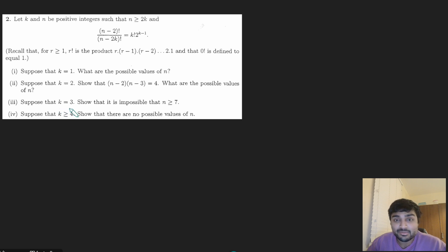Part 3. Suppose k is 3, show that it's impossible for n to be at least 7. And the final part. Suppose k is at least 4, show there are no possible values of n.